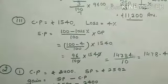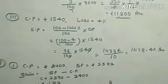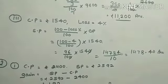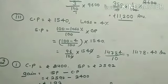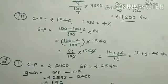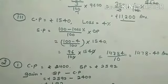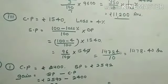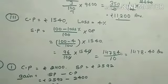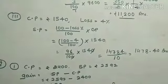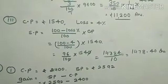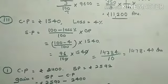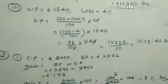Third question: CP = ₹10540, Loss = 4%. Formula: SP = [(100 − Loss%) ÷ 100] × CP. So SP = (96 ÷ 100) × 10540 = ₹10118.40.